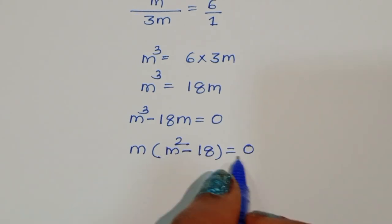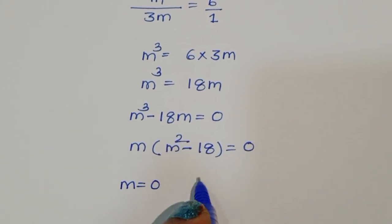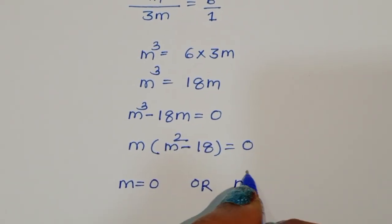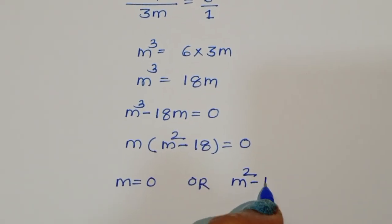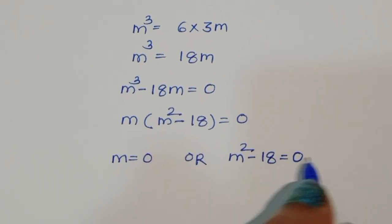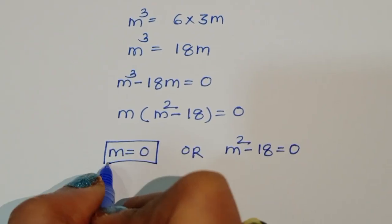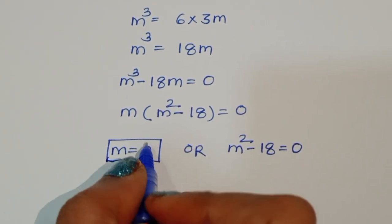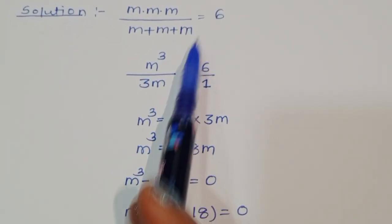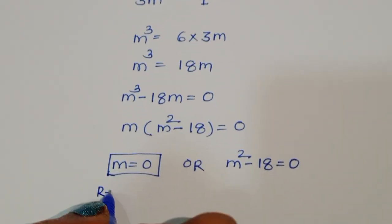We now have two equations: first, m equals 0, or second, m squared minus 18 equals 0. The solution m equals 0 is rejected because m cannot be zero in the original equation.